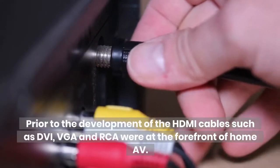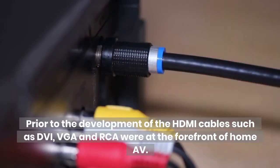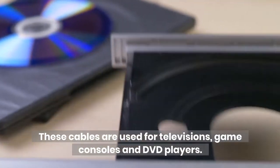Prior to the development of the HDMI cables, such as DVI, VGA and RCA were at the forefront of home AV. These cables are used for televisions, game consoles and DVD players.